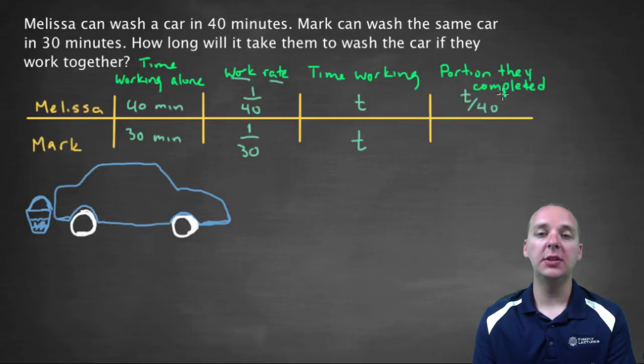Well, 20 over 40, the portion she would have completed would be half the car. Makes perfectly good sense. If she works 40 minutes, 40 times 1 over 40 would be the whole car, right? So this product, taking this product makes sense that it would give you the portion that Melissa completed of washing the car, alright?